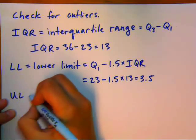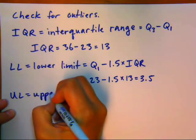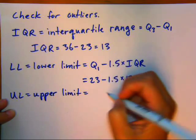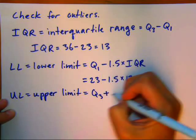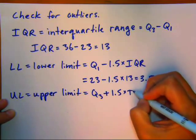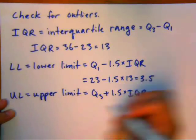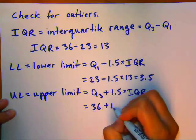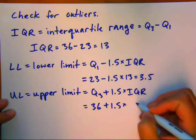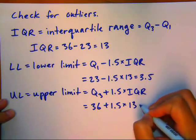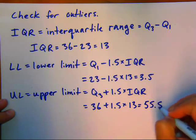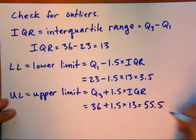The upper limit is going to be Q3 plus 1.5 times the IQR. Q3 is 36. Same IQR as before was 13. So our upper limit comes out to equal 55.5. So anybody that's older than 55.5 years would be considered an outlier.